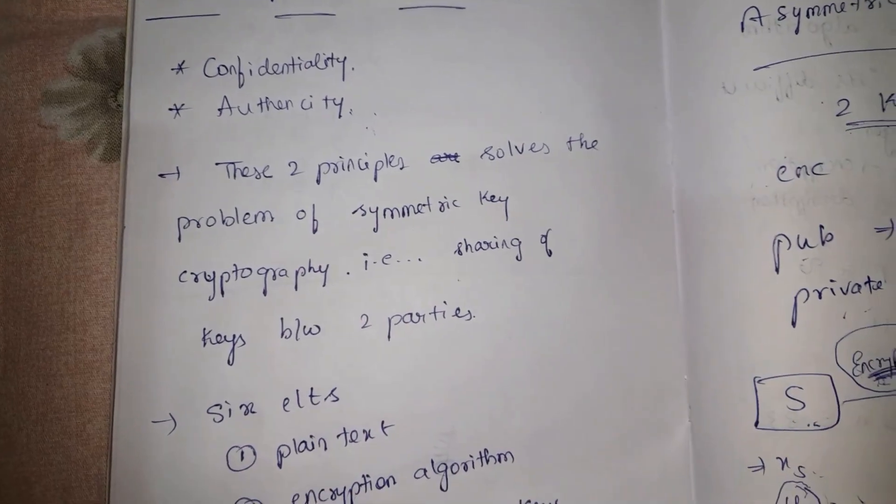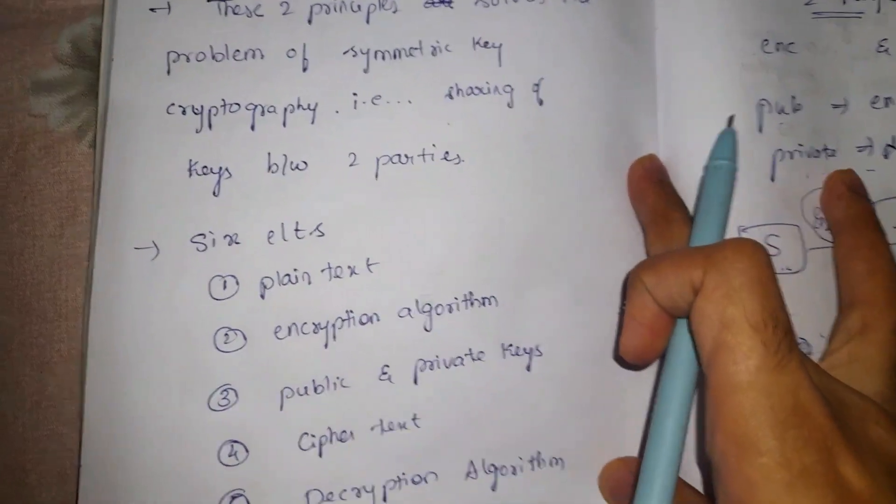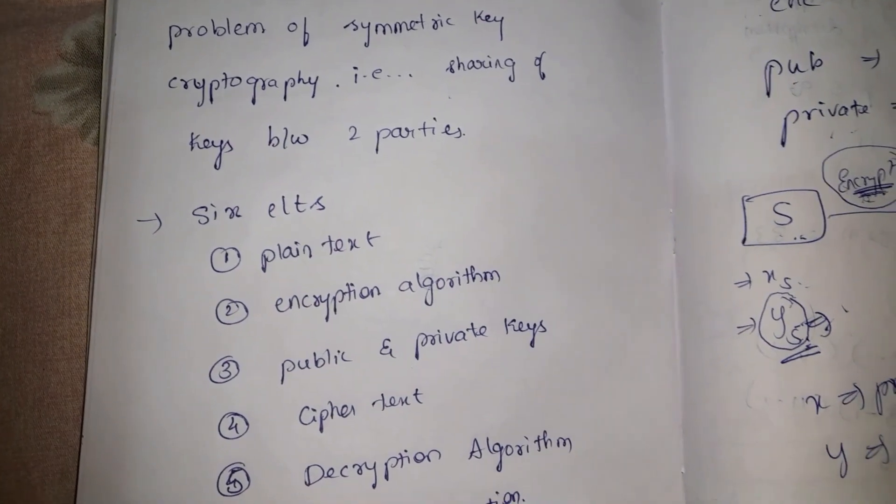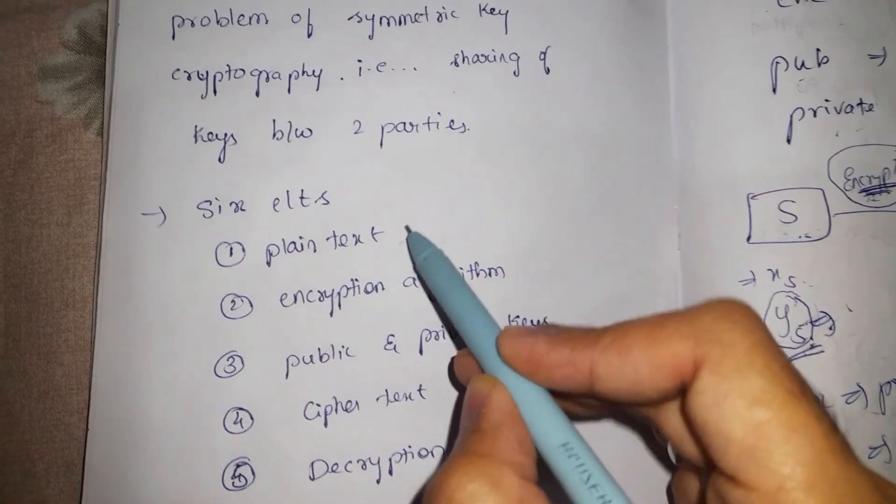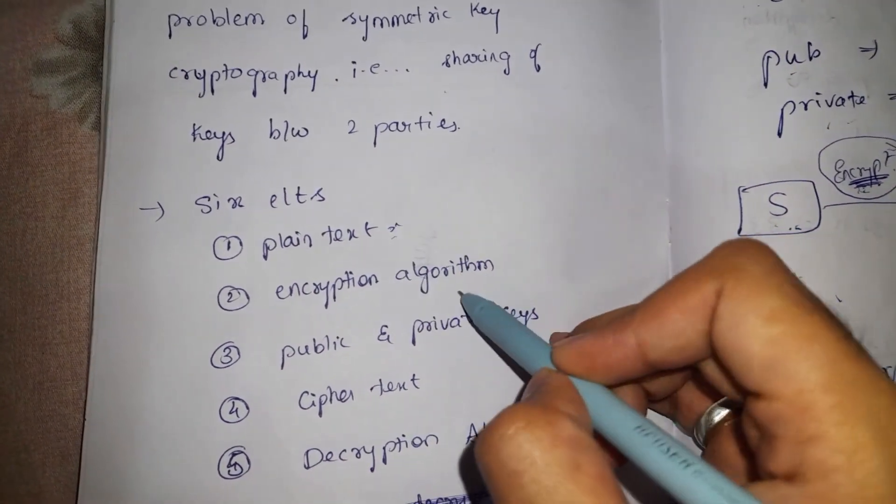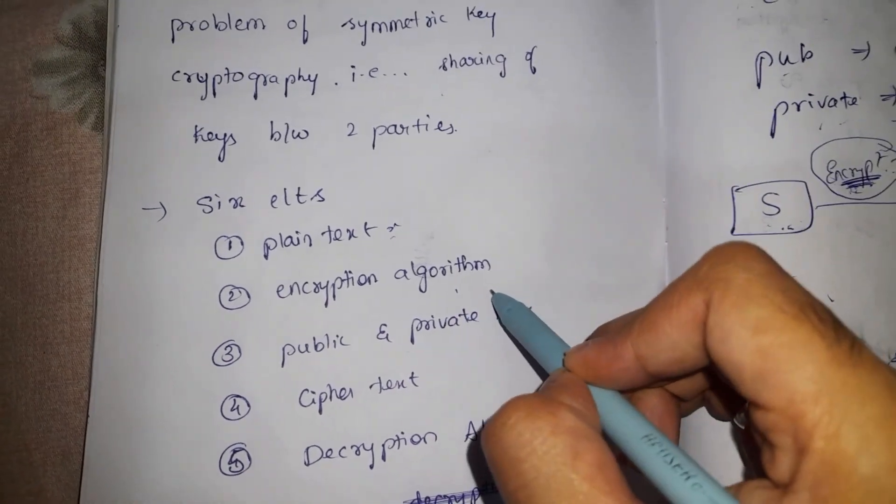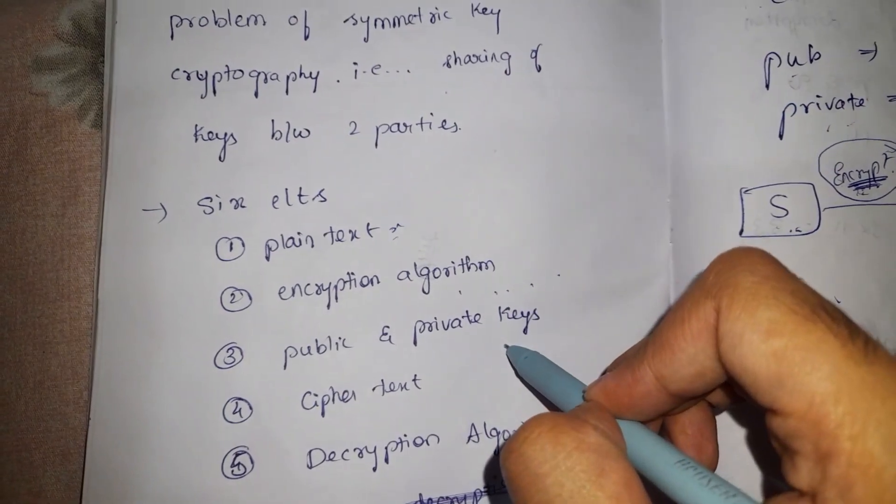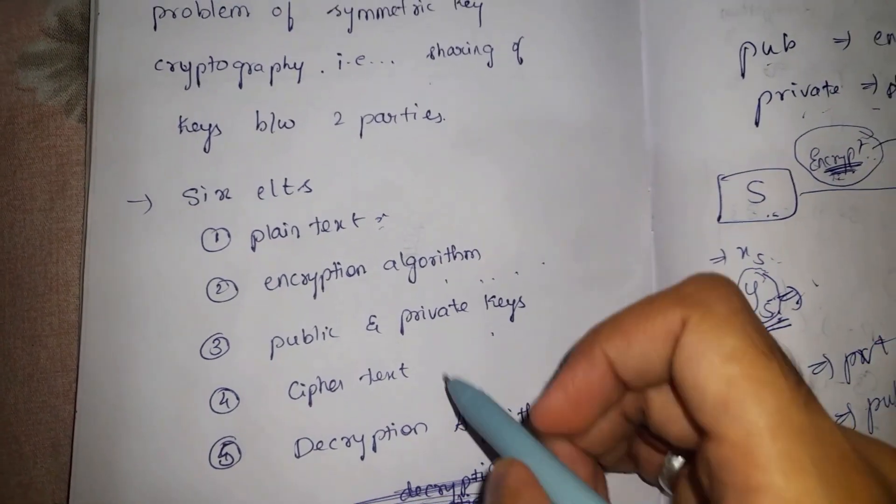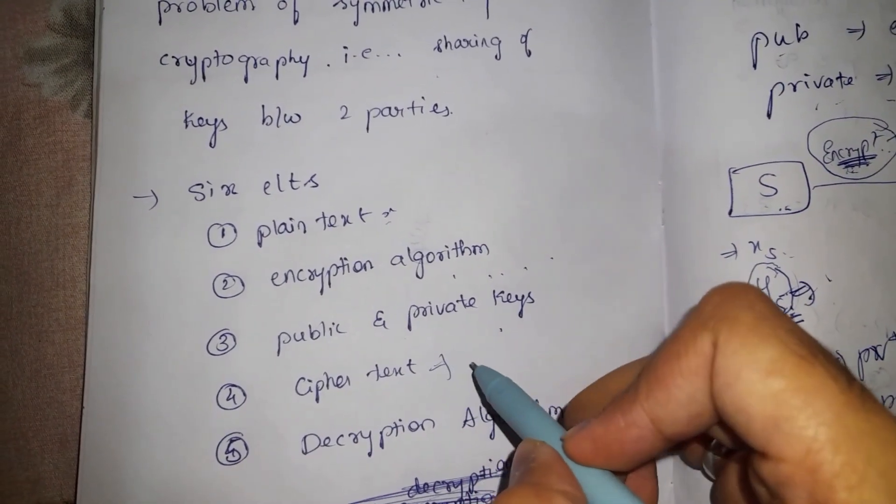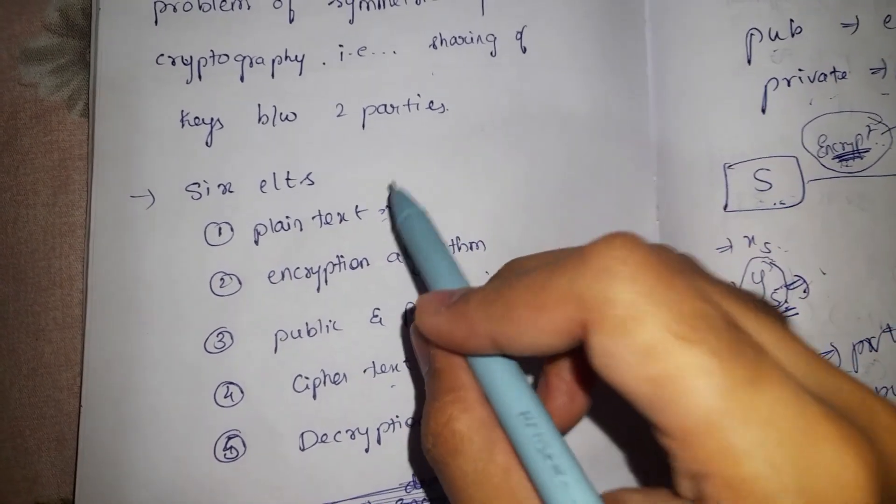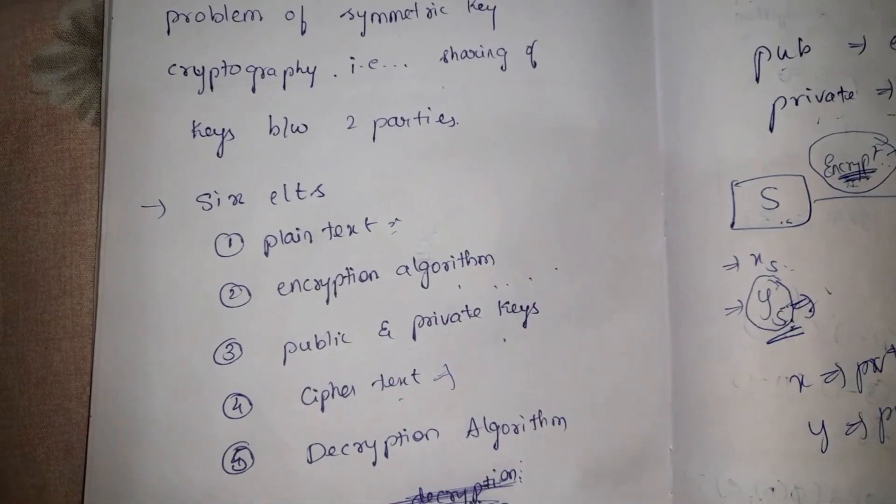Asymmetric key cryptography consists of six elements: one is plaintext, your original message; encryption algorithm, the method in which the encryption is performed; public and private keys for both sender and receiver; the ciphertext, the encrypted text; and the decryption algorithm, the method by which the ciphertext can be converted into plaintext.